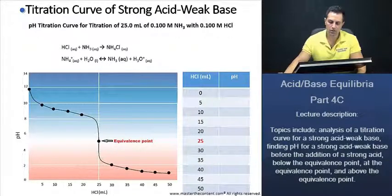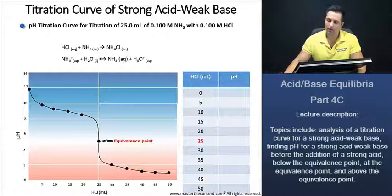Your career, our passion. The pH titration curve for titration of 25 milliliters of 1 molar ammonia with 0.1 molar hydrochloric acid.